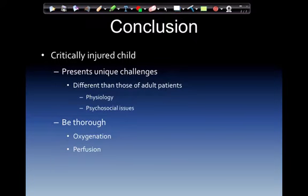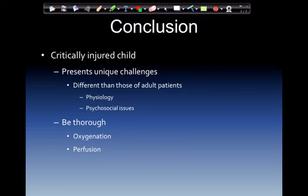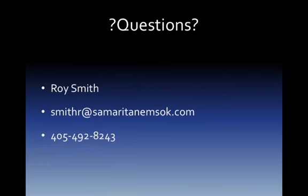In conclusion, the critically injured child presents unique challenges different from those of the adult patient. The physiology must be considered, and psychosocial issues may be present as well. Be thorough — oxygenate, oxygenate, oxygenate — and ensure adequate perfusion. If you have any questions, feel free to contact Roy Smith at smithr@samaritanemsok.com or 405-492-8243. Thank you.